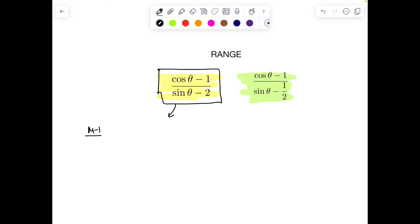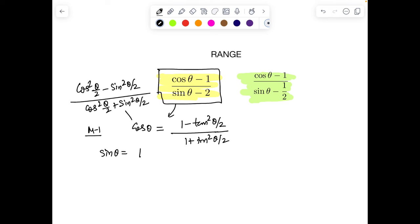Method one will be straightforward. We can make a transformation: cos θ is (1 - tan²(θ/2))/(1 + tan²(θ/2)). You can prove this easily by writing cos θ as (cos²(θ/2) - sin²(θ/2))/(cos²(θ/2) + sin²(θ/2)). Divide by cos²(θ/2), provided that's not zero, and you'll get this identity. Similarly we can write sin θ as 2tan(θ/2)/(1 + tan²(θ/2)).